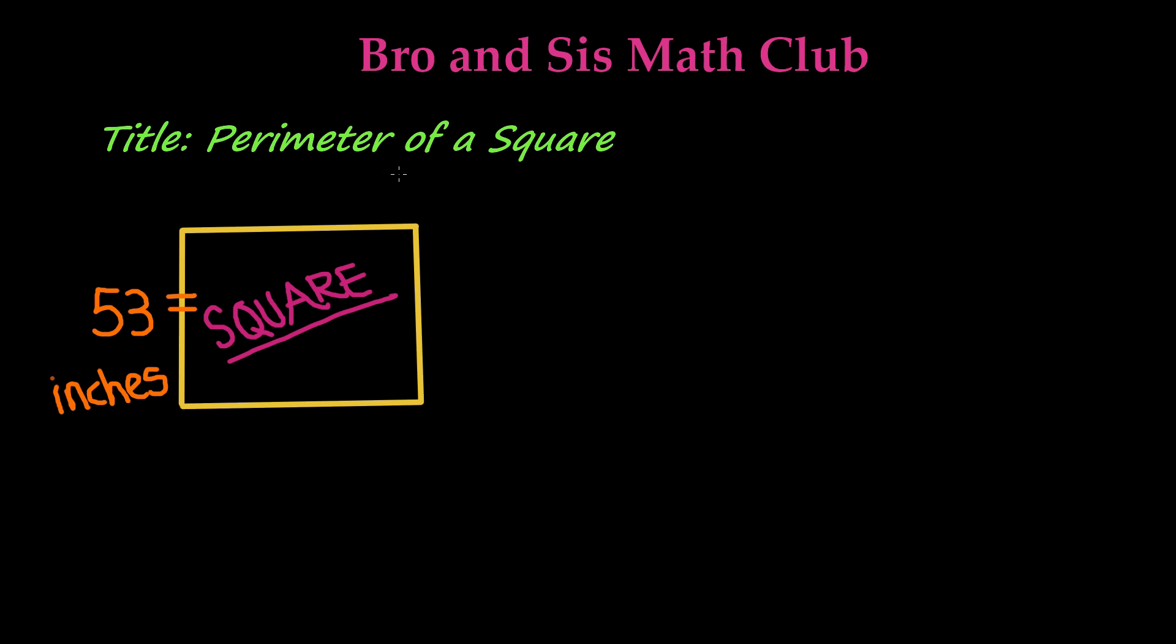The formula for finding the perimeter of a square is P equals 4a. P is the perimeter, and 4a means we're going to multiply one side measurement of the square. In this case, we're using the variable a to represent it.